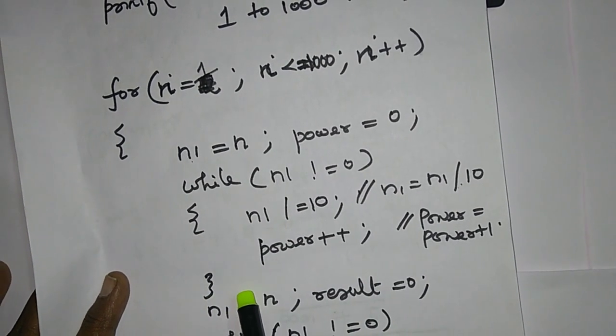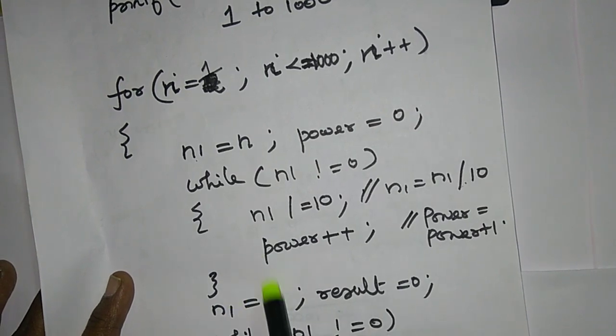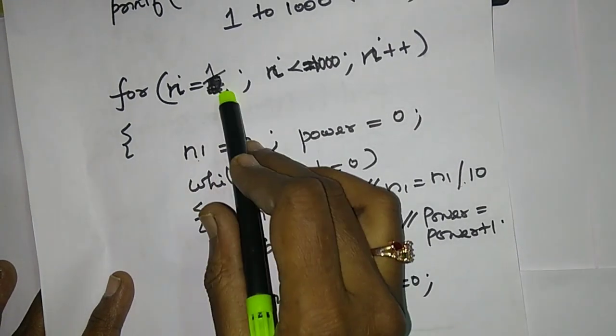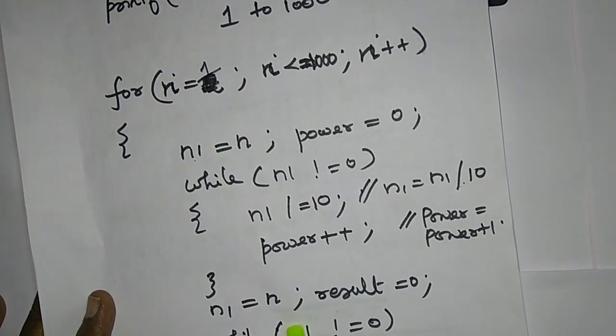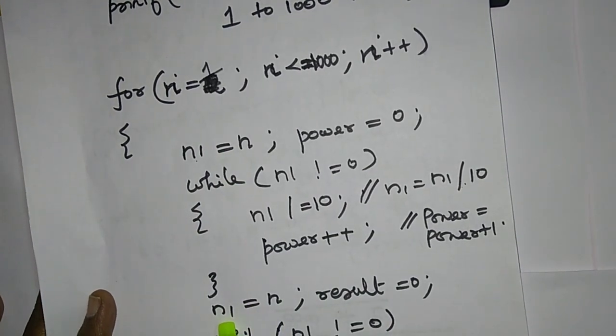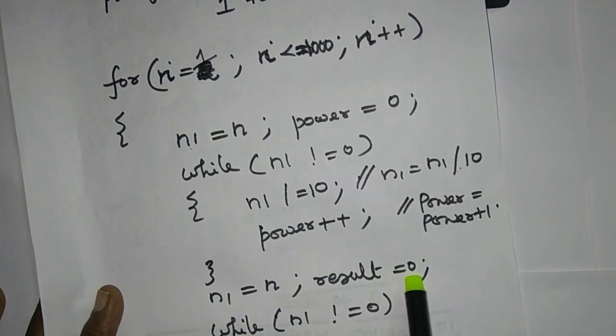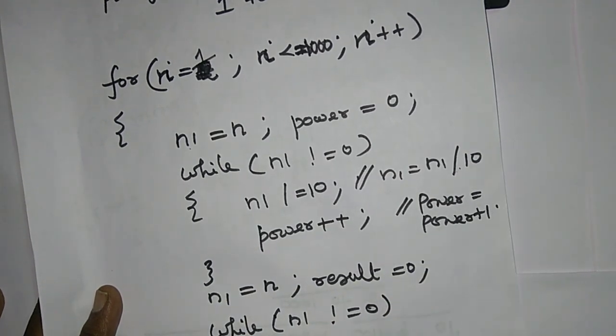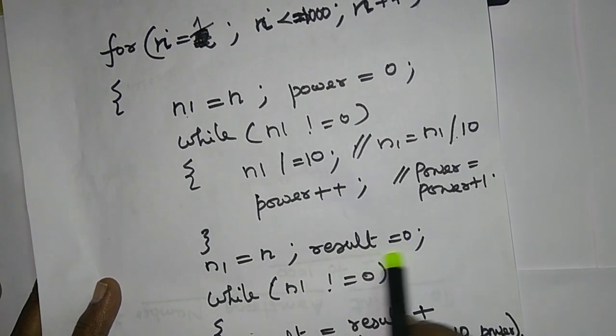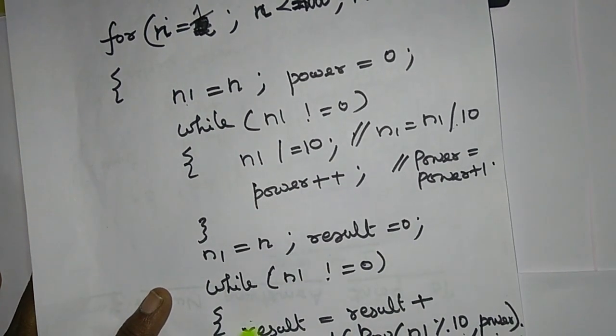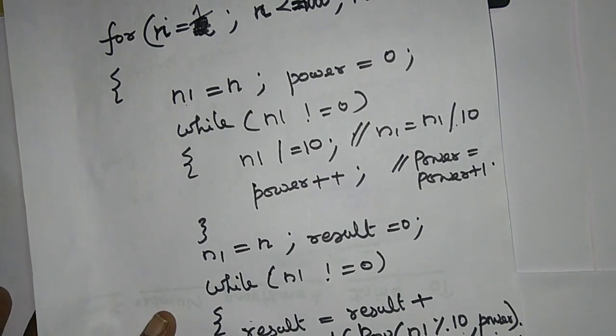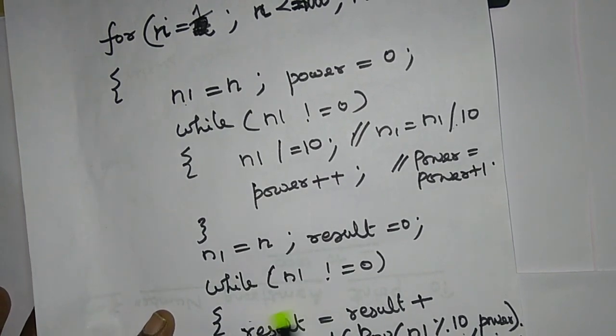N1 equal to zero. The original value is 1 and the original value is 1. This is the result equal to zero.